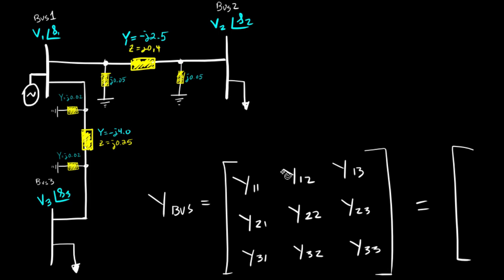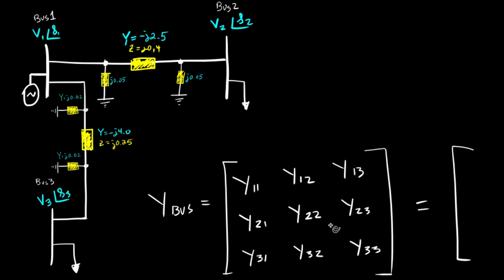One conclusion that we drew was that the diagonal elements — Y11, Y22, and Y33 — represent the admittance of a particular bus. They essentially equal the sum of all of the admittances connected to that bus. So Y11 equals the sum of admittances connected to bus 1, Y22 the sum connected to bus 2, and Y33 the sum connected to bus 3.